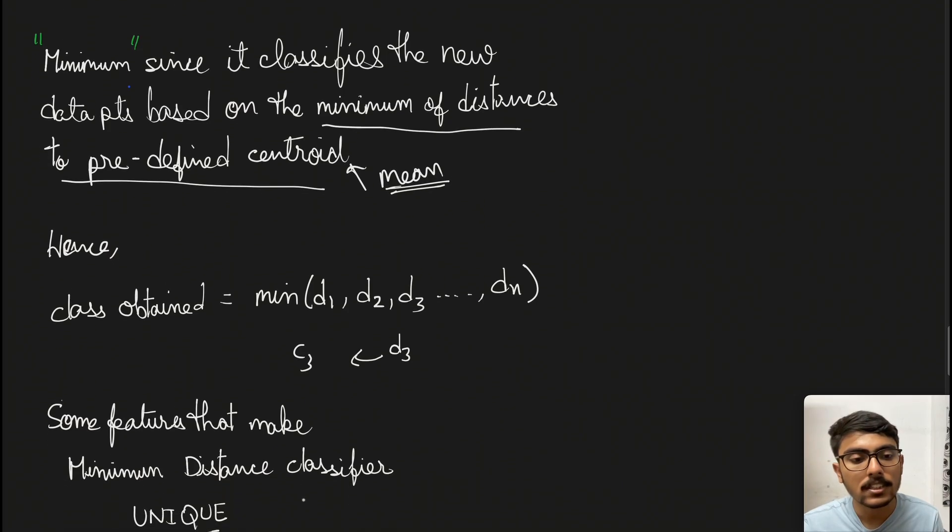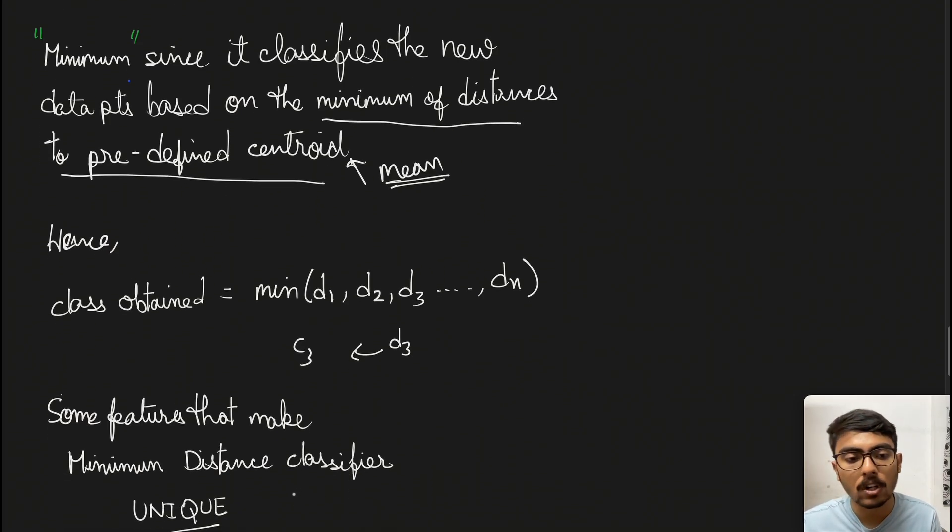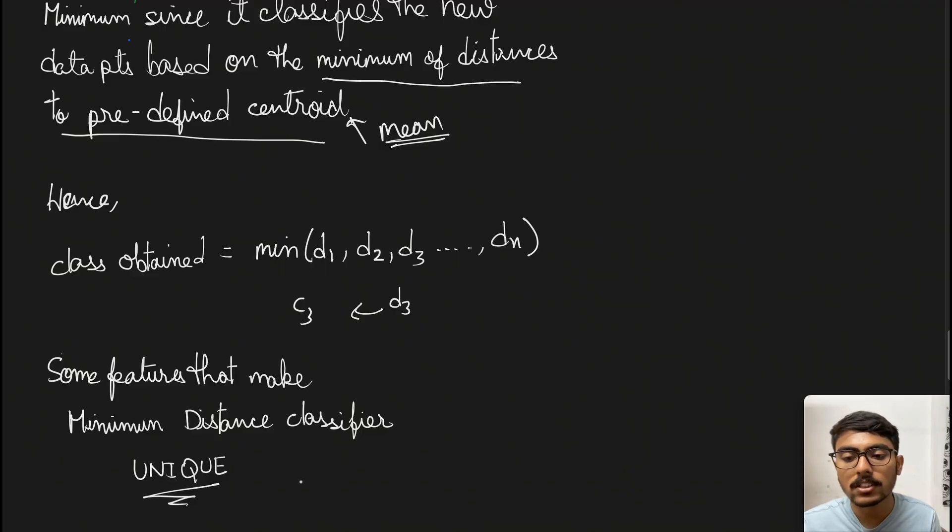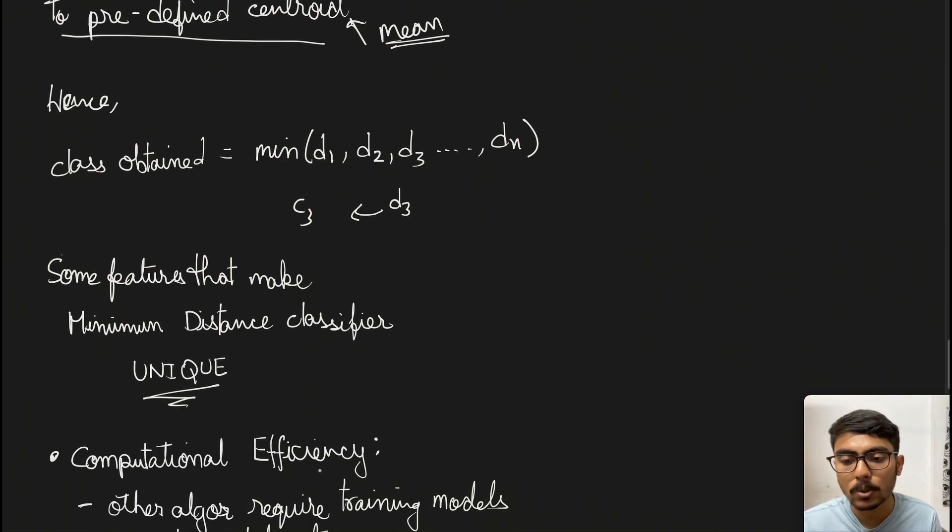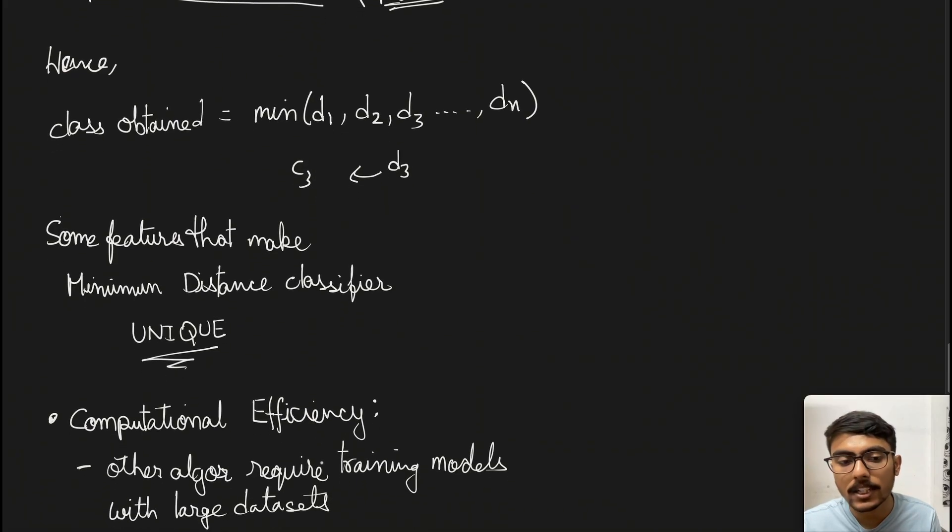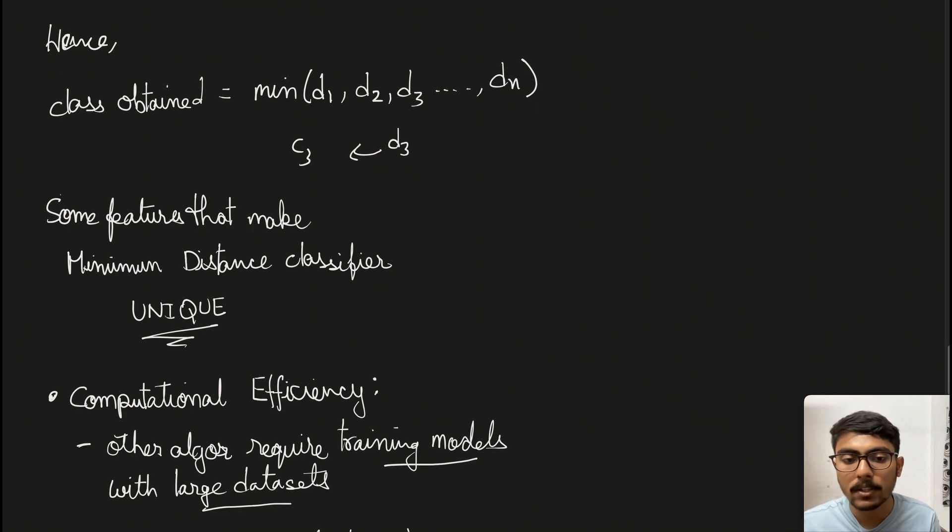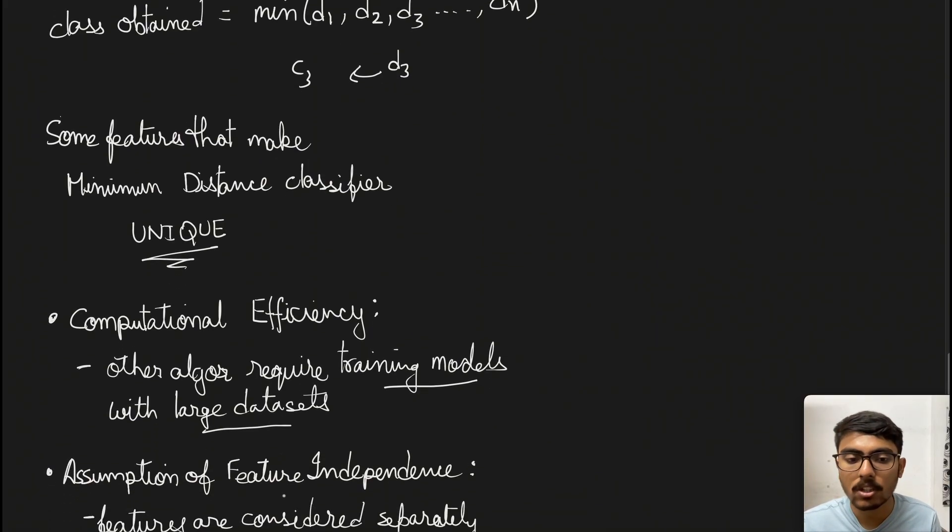Now some important features to consider before calculating minimum distance classifier. First is computational efficiency. Since we're only calculating distance between the data point and centroid, much computation that could have been done with other data points is avoided. Other algorithms require training models with large datasets. They take more time than minimum distance classifier.